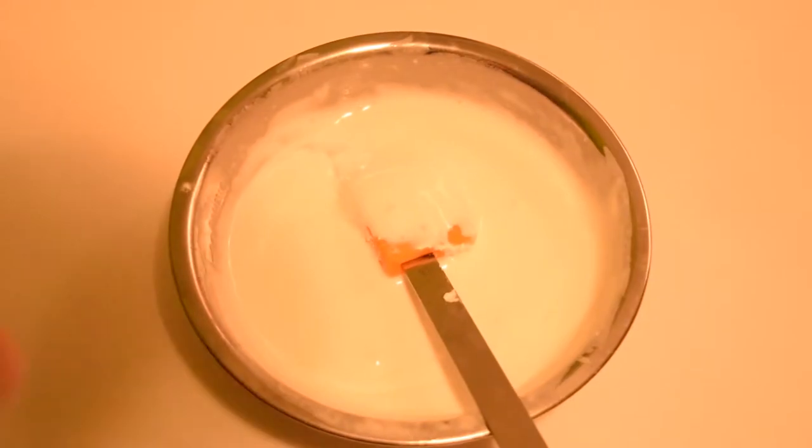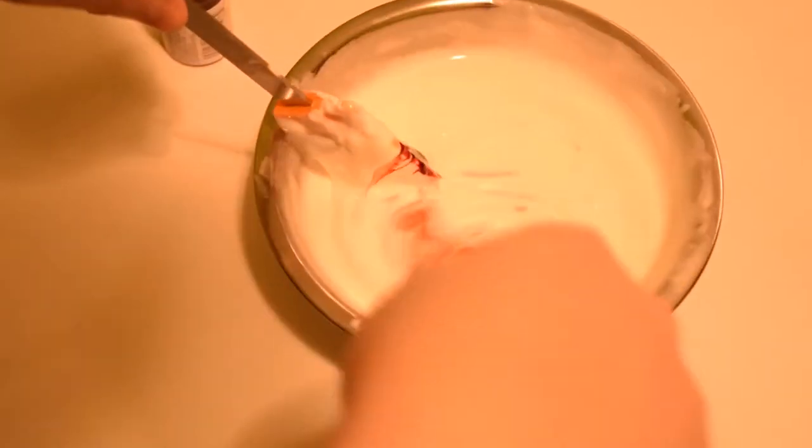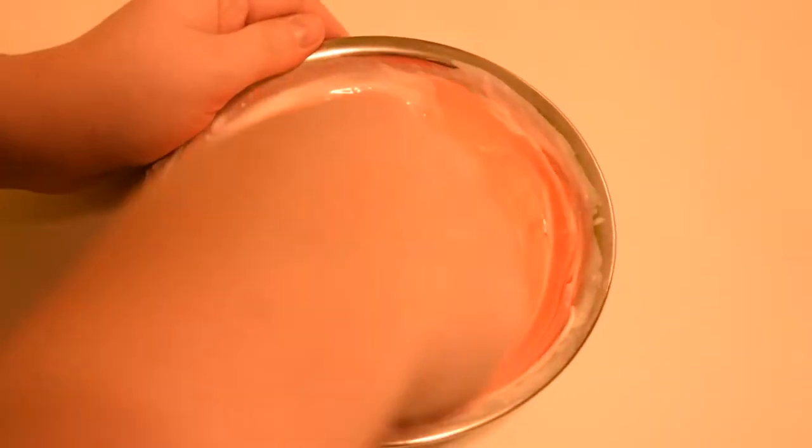The second portion of my royal icing needs to be colored red. To do this I just get a butter knife and some gel paste and mix it into the royal icing.